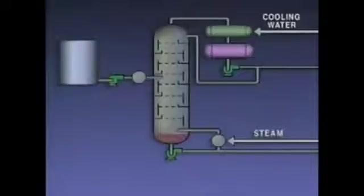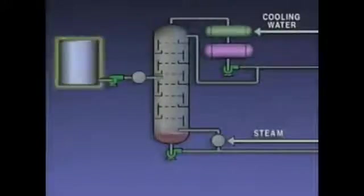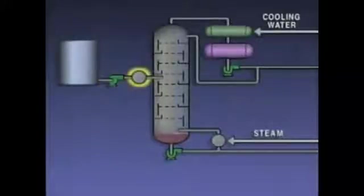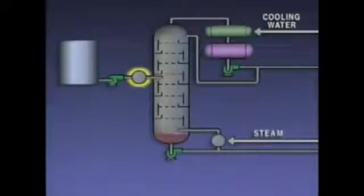Let's take a look at a simplified representation of a distillation system. In this example, the feed is stored in a tank. During operation, a pump is used to move the feed from the tank to a preheater. In the preheater, the mixture is heated under pressure to just below its boiling point.